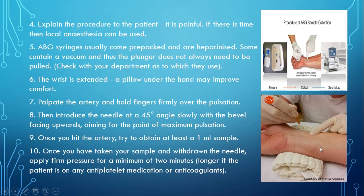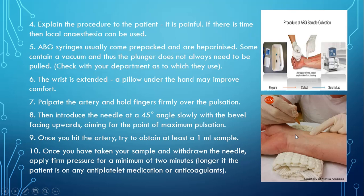The wrist is extended — a pillow under the hand may improve comfort. Palpate the radial artery with your fingers firmly over the pulsation. Introduce the needle at an angle of 45 degrees, aiming for the point of maximum pulsation. Once you hit the artery, obtain at least 1 ml of sample. After withdrawing the needle, apply firm pressure on the puncture site for two minutes to ensure hemostasis.